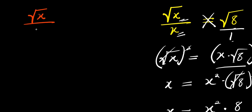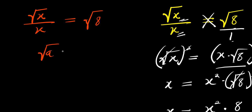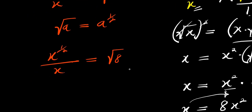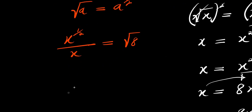Square root of x divided by x equals square root of 8. Remember, if you have square root of a, this equals a to the power of 1 over 2. So square root of x is the same thing as x to the power of 1 over 2, divided by x, equals square root of 8. And don't forget, this x is to the power of 1.